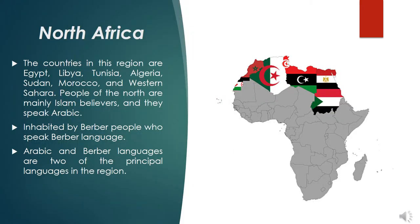North Africa consists of countries situated in the northernmost portion of the African continent. The countries in this region are Egypt, Libya, Tunisia, Algeria, Sudan, Morocco, and Western Sahara. People of the North are mainly Islam believers, and they speak Arabic. North Africa is also inhabited by Berber people who speak Berber language. Arabic and Berber languages are two of the principal languages in the region.